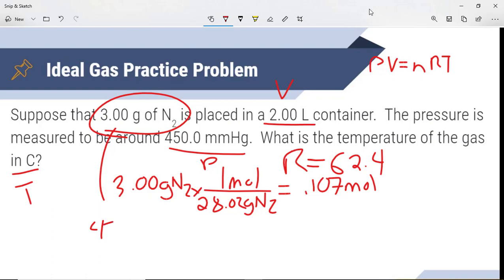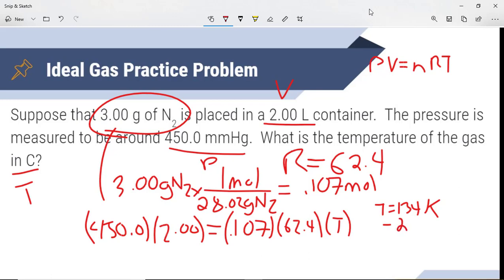So our pressure, 450.0. Our volume, which is two liters, equals our mole number, gas constant R, times an unknown value for T. Plug in and solve. So for our temperature, we get 134 Kelvin. But remember, it is asking for it in Celsius. So in order to convert that back to Celsius, we are going to subtract 273.15. For a final temperature of negative 138 degrees Celsius.